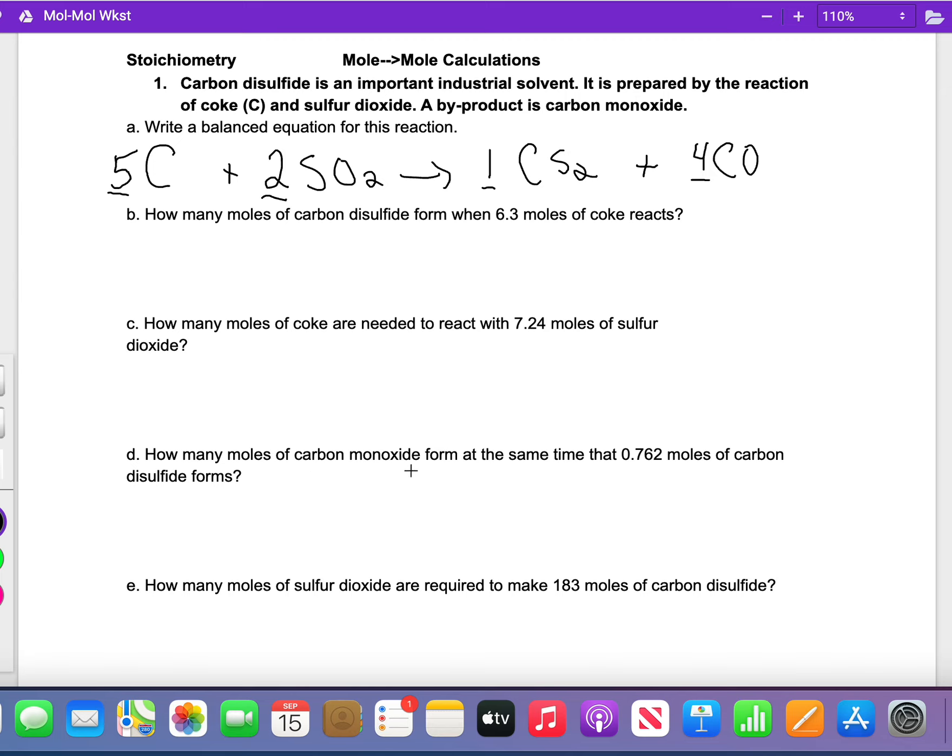How many moles of carbon monoxide form at the same time 0.762 moles of carbon disulfide forms? So you write down what the problem gives you: 0.762 moles carbon disulfide. You draw the picket fence. It's really important to write the unit and the chemical that it goes with, because that tells you what to do next.